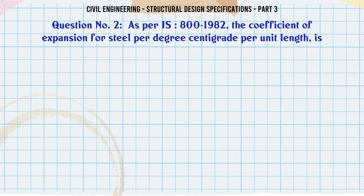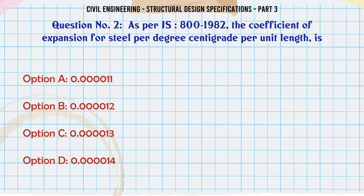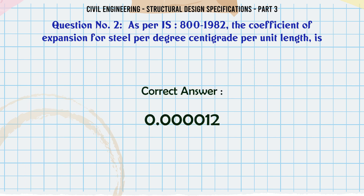As per IS800-1982, the coefficient of expansion for steel per degree centigrade per unit length is: a. 0.000011, b. 0.000012, c. 0.000013, d. 0.000014. The correct answer is: 0.000012.